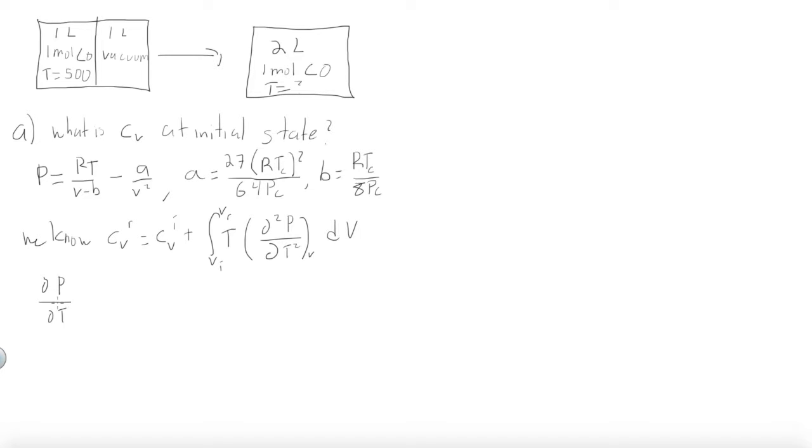And from the van der Waals equation we can find the first partial derivative with constant volume, which is R over V minus B. And then we can also do the second partial derivative. Just differentiate again, and we get zero.